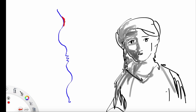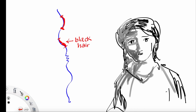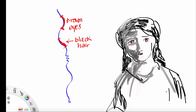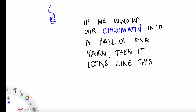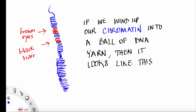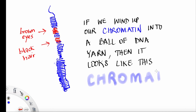Alleles can also code for physical characteristics such as black hair and brown eyes. If we wind up the chromatin into a big ball of DNA yarn, it actually looks like a ball of yarn that we call a chromatid.